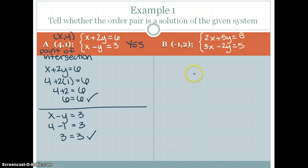So for B, it's the same thing. So we have to start by plugging in. So our first equation, again, is 2x plus 5y is equal to 8. That's 2 times negative 1 plus 5 times 2 is equal to 8. That's negative 2 plus 10 is equal to 8. 8 is equal to 8. So it does check in the first equation.